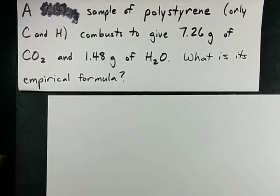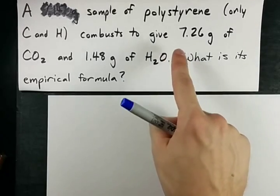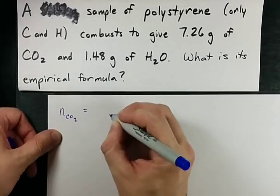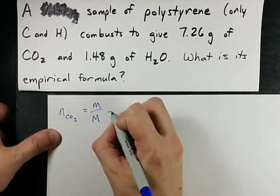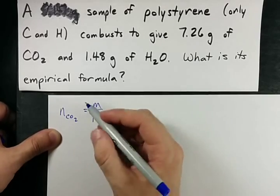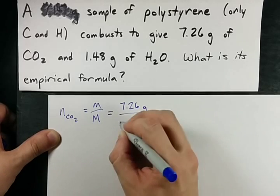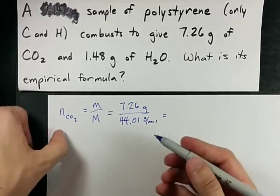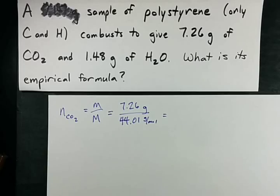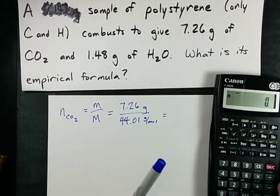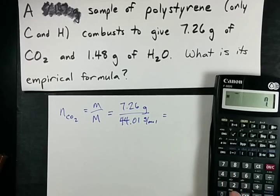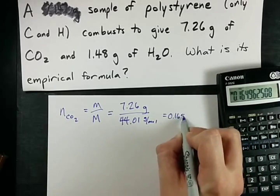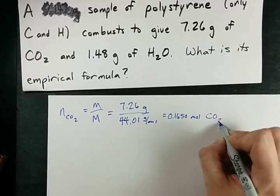Now, check out how we do this. If we know that we have 7.26 grams of carbon dioxide, we can figure out how many moles of carbon dioxide that is. The formula for moles is mass over molar mass. The number of moles of carbon dioxide in the products is 7.26 grams divided by the molar mass of carbon dioxide. You know how to get molar mass. 7.26 divided by 44.01 gives me 0.1650 moles of this carbon dioxide stuff.